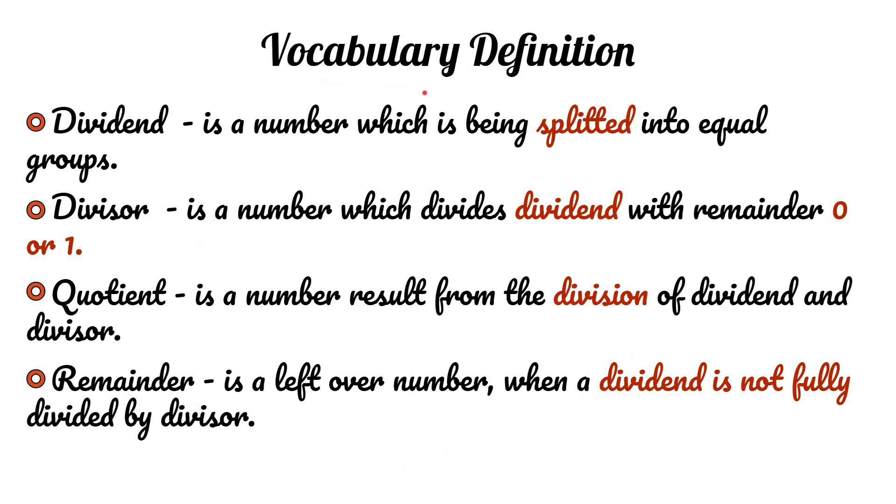Vocabulary definitions: Dividend is a number which is being split into equal groups. Divisor is a number which divides the dividend with remainder 0 or 1. Quotient is the number resulting from the division of dividend and divisor. Remainder is the leftover number when a dividend is not fully divided by the divisor.